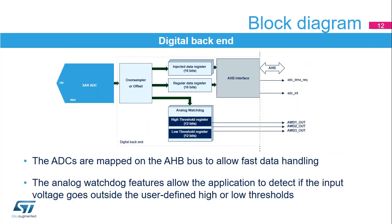The digital backend performs processing on the samples obtained in the SAR-ADC in the oversampler and offset unit. Raw samples may be processed by the oversampler and offset compensation units before being provided to the software. The results are then stored into registers that are accessible from the AHB slave interface. AHB supports higher bandwidth and minimizes latency because the CPU and DMA are also connected to the AHB interconnect. The ADC is able to assert a request to the DMA so that samples coming from regular channels are automatically moved to memory.